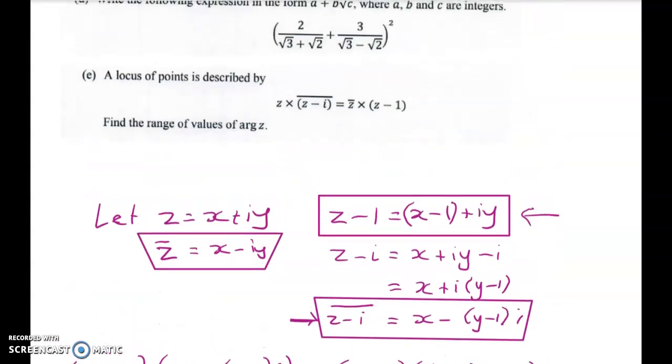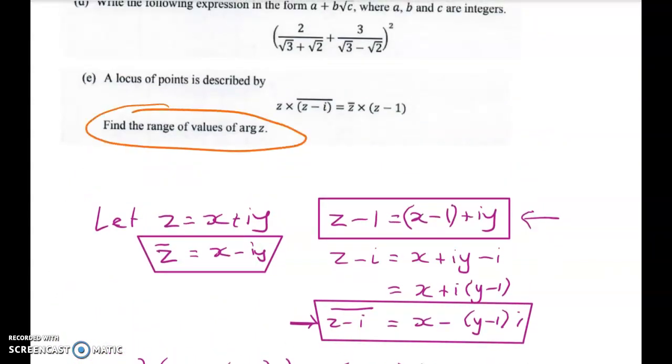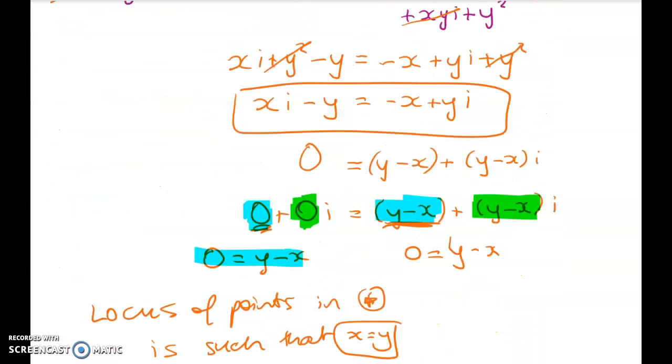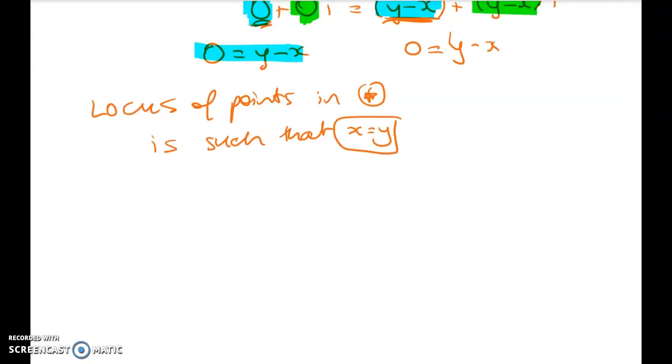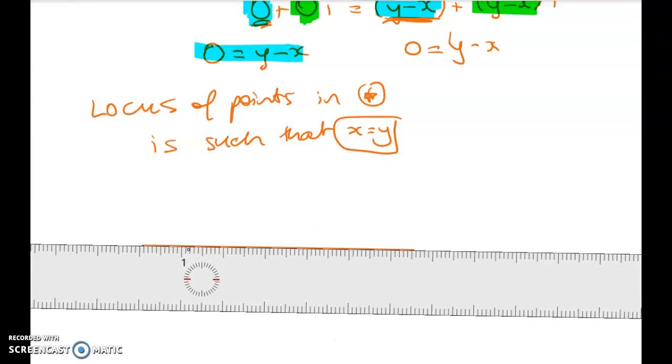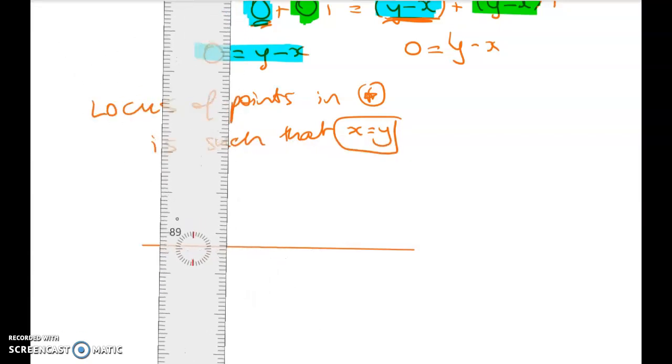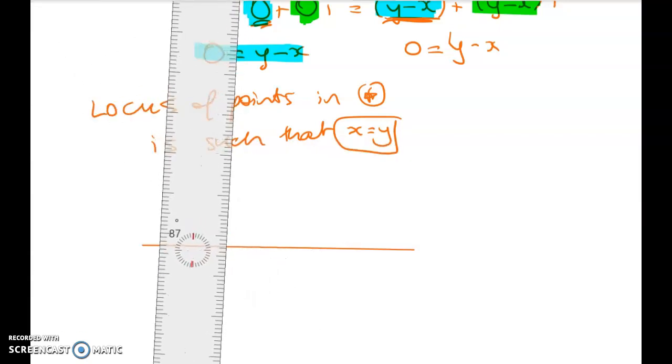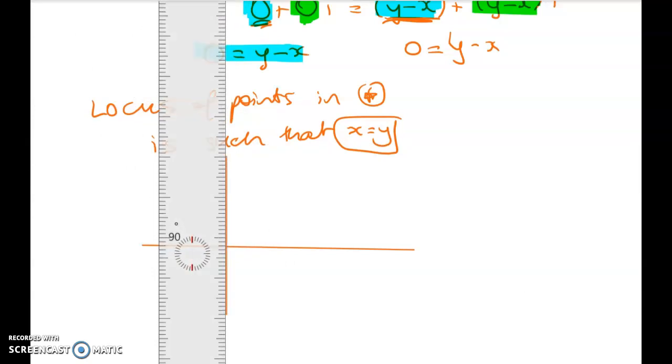But we weren't asked to stop there, right? What we were asked for is to find the range of values of arg z. So we're going to draw a picture now. I might even use a ruler because I've got time, because I've only used up 10 minutes. So here's my little argand diagram. Oh, I love how this tells me when it's perpendicular. There we go. Okay.